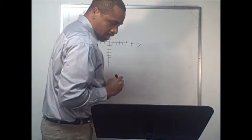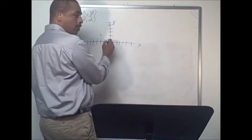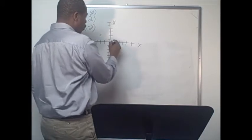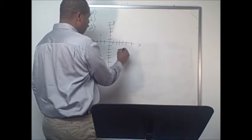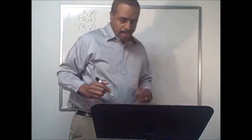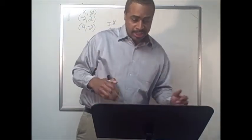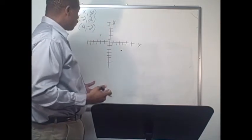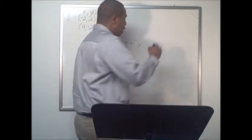The second point is four, negative two. So we come over on positive x — one, two, three, four — and down one, two on the negative y. Now we have our two points. The question you could face on the GED test is: you need to find the slope of this line. There is a formula to help you find the slope of a line, and that formula is...